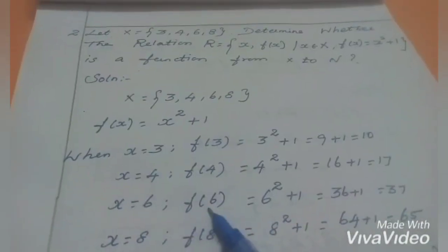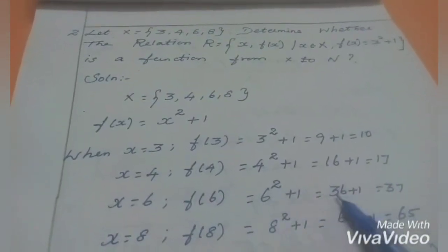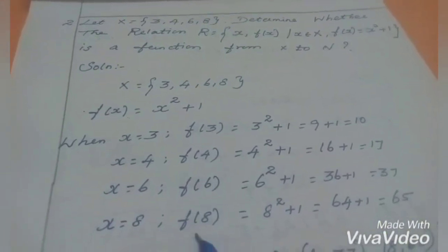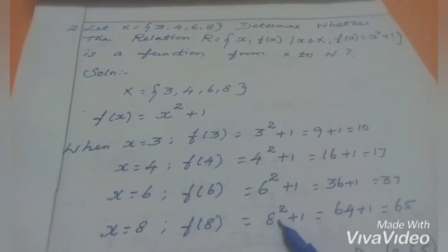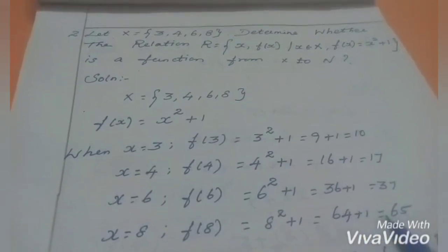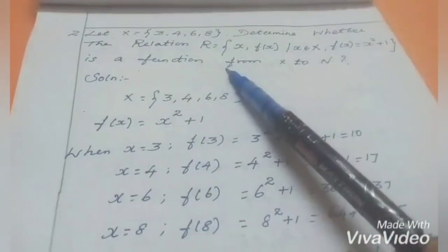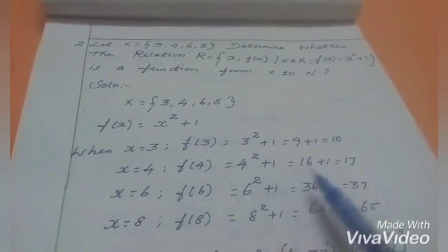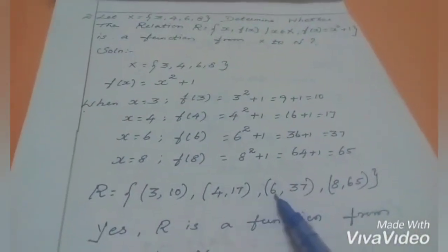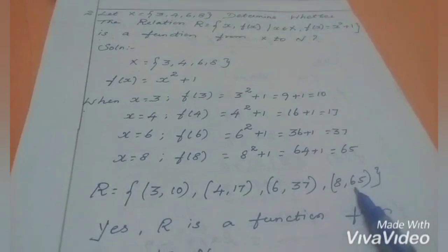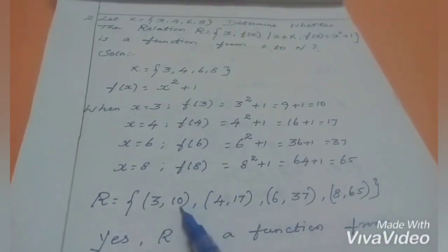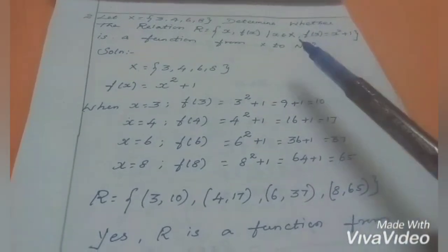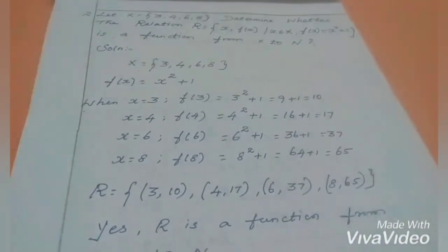When x = 6: f(6) = 6² + 1 = 36 + 1 = 37. When x = 8: f(8) = 8² + 1 = 64 + 1 = 65. Writing the relation: {(3,10), (4,17), (6,37), (8,65)}. Since 10, 17, 37, 65 are all natural numbers, R is a function from X to N.